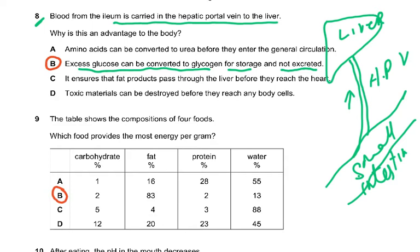The hepatic portal vein has no fats in it — fats are carried by the lacteals, enter through the lymphatics, and then enter the bloodstream through the lymphatic vessels via the subclavian vein. They do not go directly to the liver. The answer that 'toxic materials can be destroyed before reaching any body cells' is also incorrect.